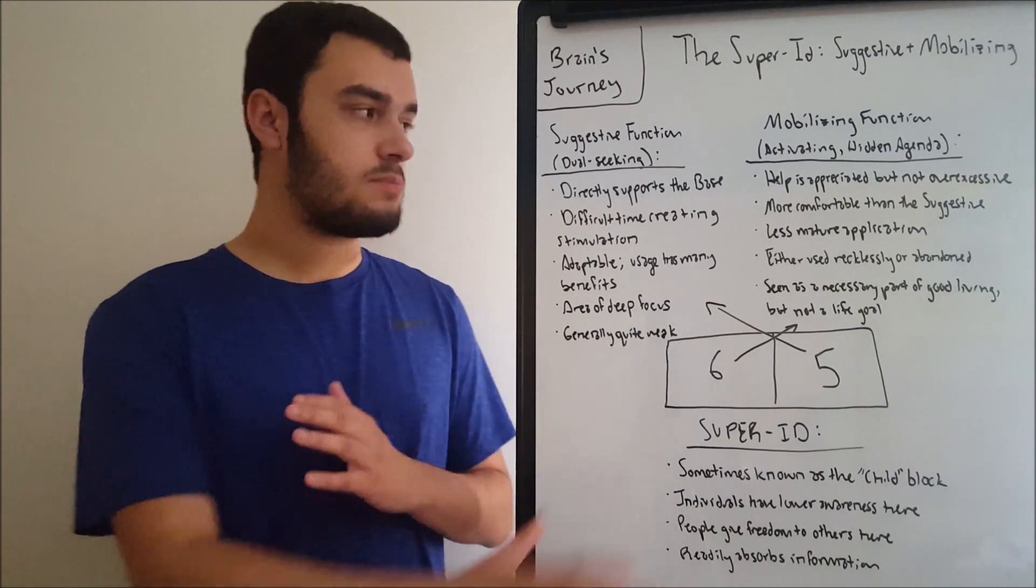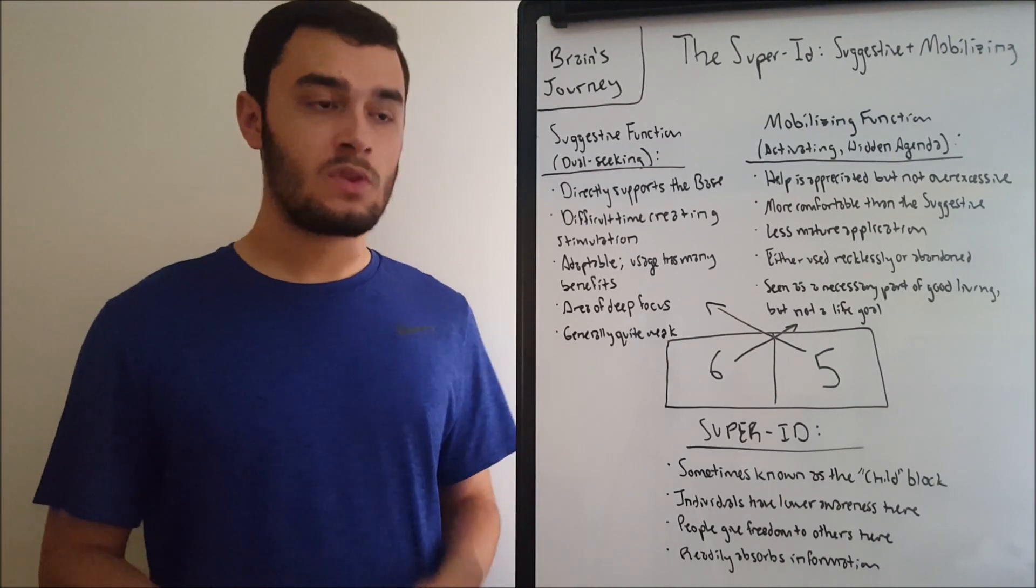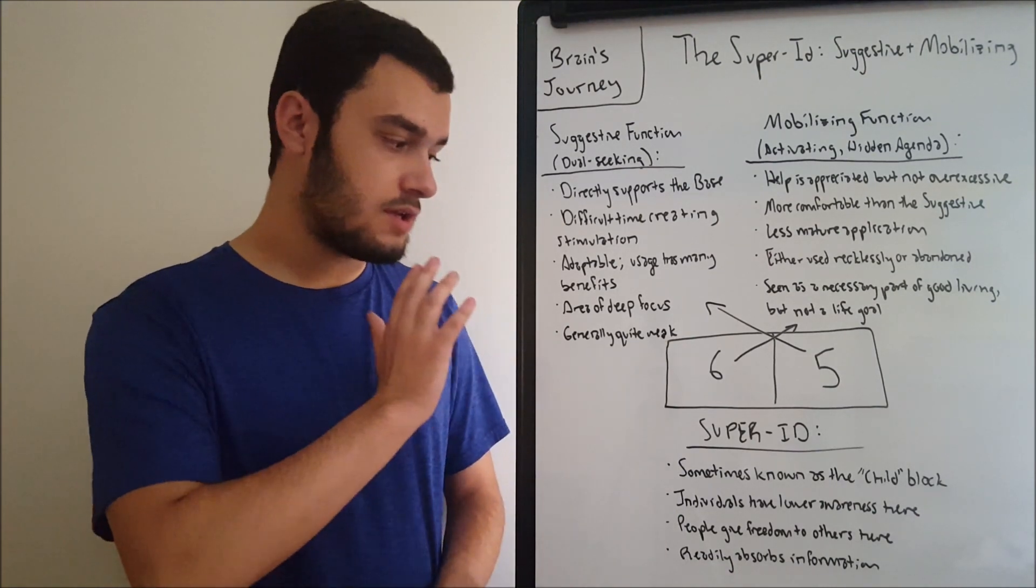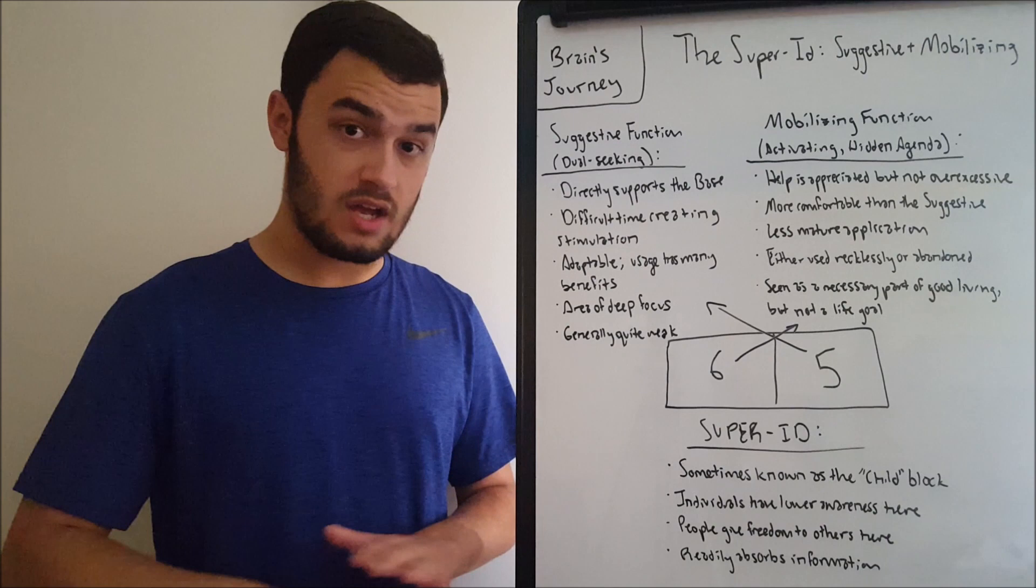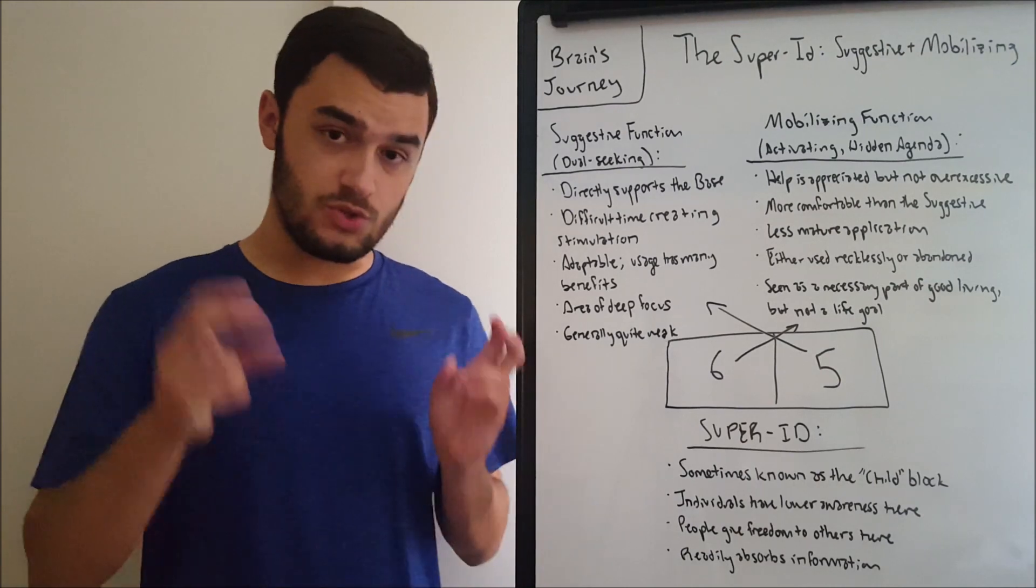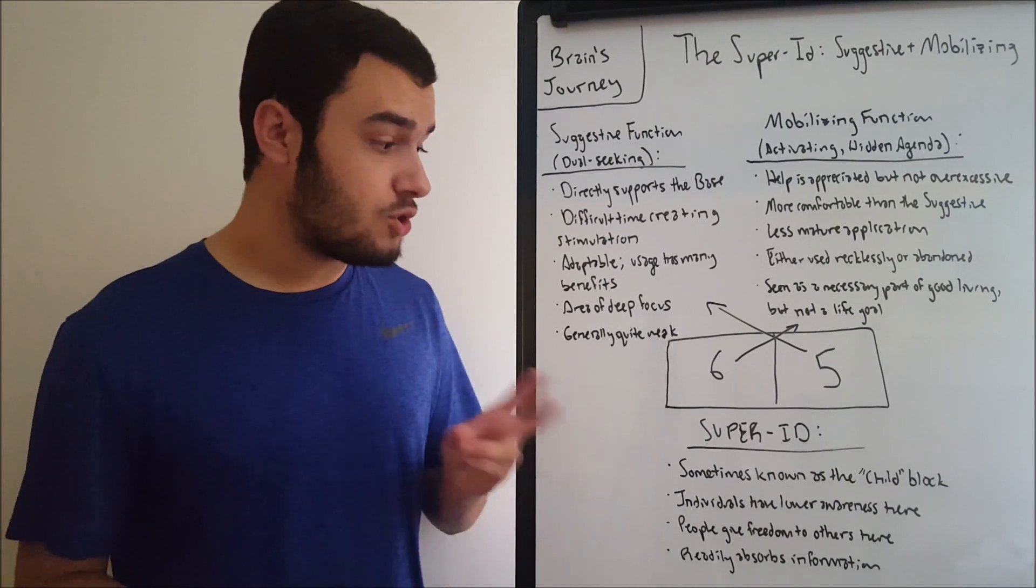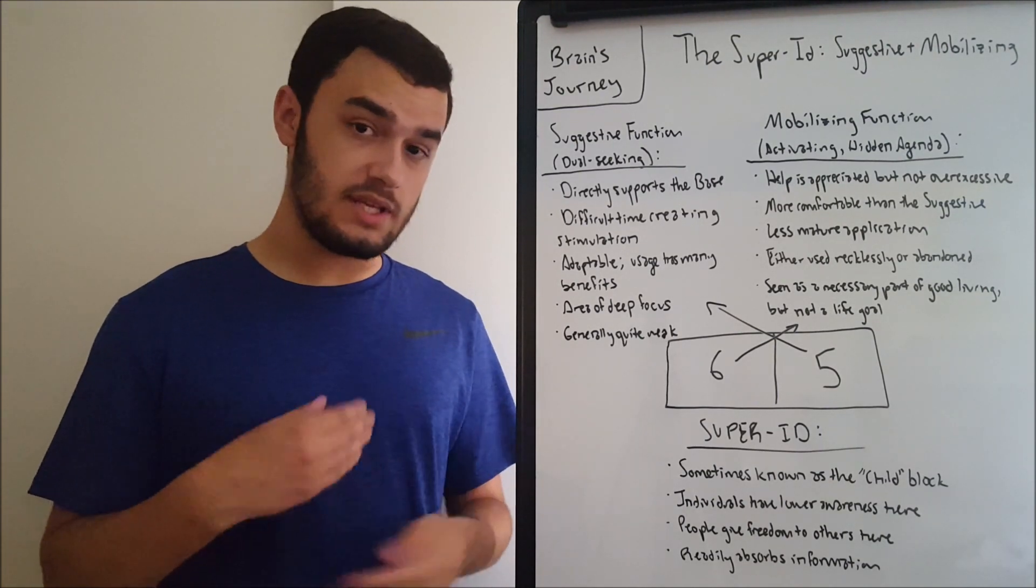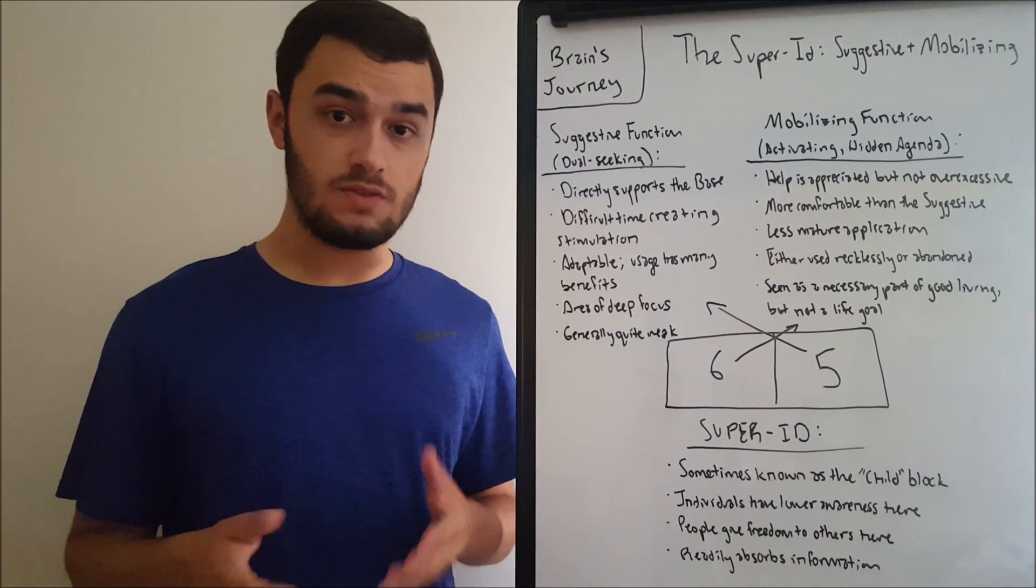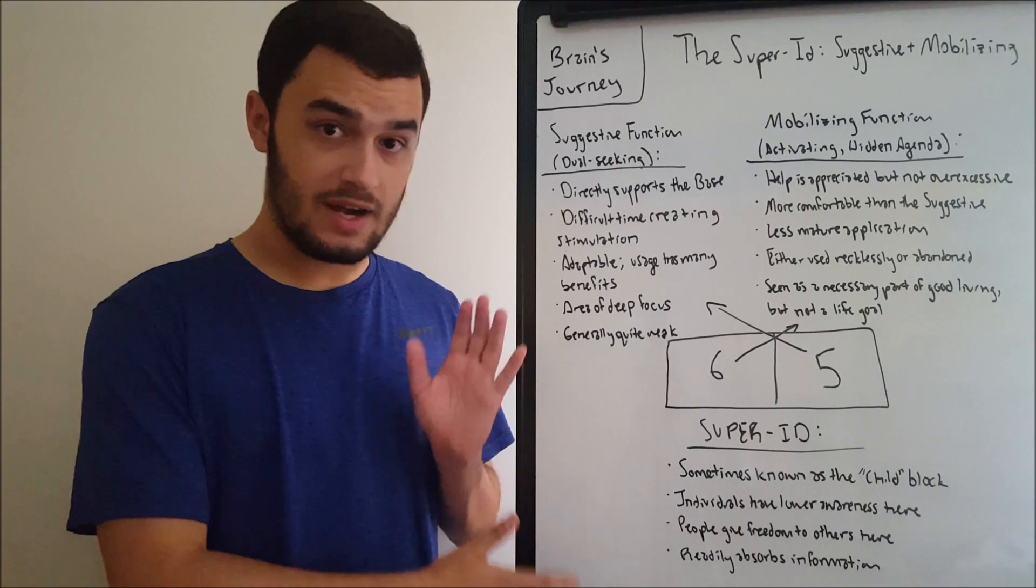So what does the blocking look like? What does the blocking, the combination of these two functions look like as a whole? So here we have the super id grouping, obligatory. Like I said in the past two videos, this is not Freud. This is not Jung. This is just a terminology thing. It's not related to those concepts. It's just named after them. With that being said, the super id is sometimes known as the child block for our ability to not properly comprehend information here, and two, our ability to engage in it clumsily and purposelessly. We don't always have the best usage of these functions, so it's often seen as the child, as an archetype. We don't actually make a direct comparison there.